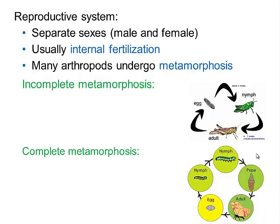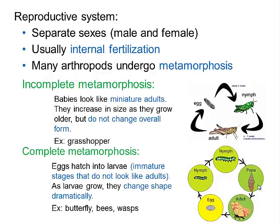For reproduction, arthropods have separate sexes — male and female — and use internal fertilization, so sperm is deposited inside the female. Many arthropods undergo metamorphosis, and there are two types. In incomplete metamorphosis, the nymph and adult look very similar. In complete metamorphosis, like a butterfly, the nymph and adult look drastically different, and it goes through a pupa stage as well. In incomplete metamorphosis, babies look like miniature adults; in complete metamorphosis, the shapes differ significantly.